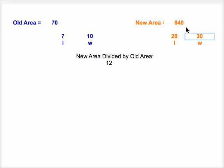Again, divide eight forty by seventy, the new area by the old area. Again, I get twelve every time. And that's just further proof that we've got the right answer by saying that the old area would increase by a factor of twelve.